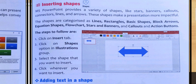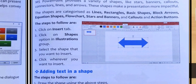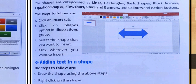Here you can see the steps. Click on the Insert tab. First of all you need to click on the Insert tab. If you want to insert anything, go to Insert tab and click. Click on Shapes in the Illustration group. Go to Illustration group and click on Shapes. Select the shape that you want to insert as per your choice and presentation. Click wherever you want to insert.